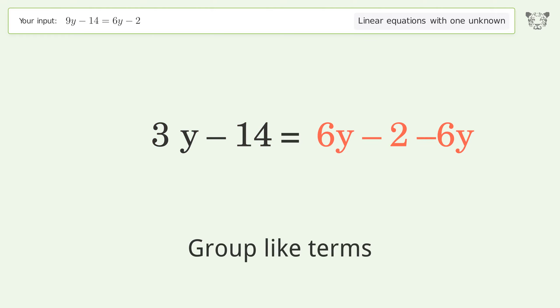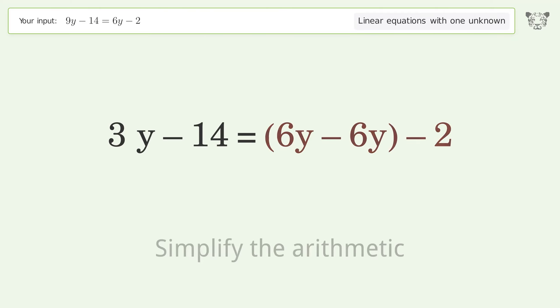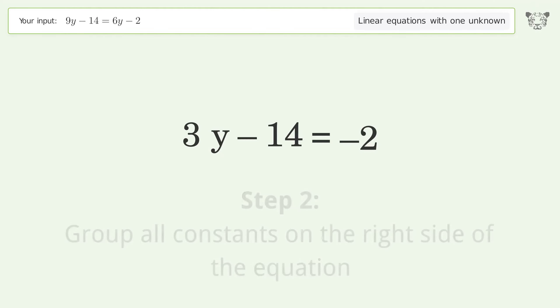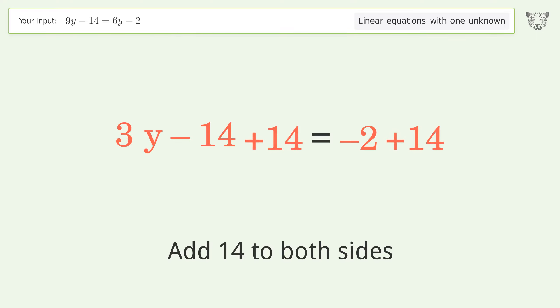Group like terms. Simplify the arithmetic. Group all constants on the right side of the equation. Add 14 to both sides. Simplify the arithmetic.